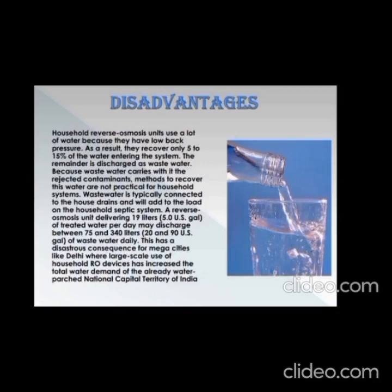The last slide covers disadvantages. Household reverse osmosis units use a lot of water because they have low back pressure; as a result, they recover only 5 to 15 percent of the water entering the system. The remainder is discharged as wastewater carrying rejected contaminants, and methods to recover this water are not practical for household systems. Wastewater is typically connected to house drains, adding to the load on the household septic system. A unit delivering 19 liters of treated water per day may discharge between 75 and 340 liters of wastewater daily. This has disastrous consequences for mega cities like Delhi, where large-scale use of household RO devices has increased total water demand in the already water-scarce national capital territory of India.